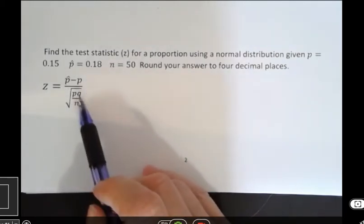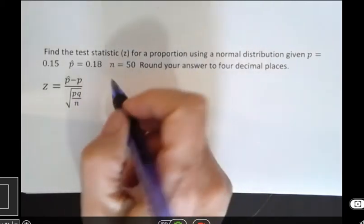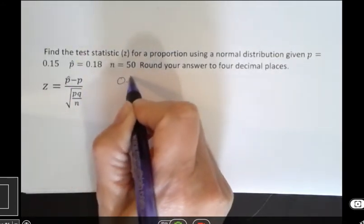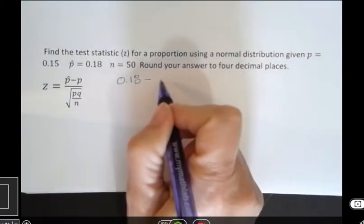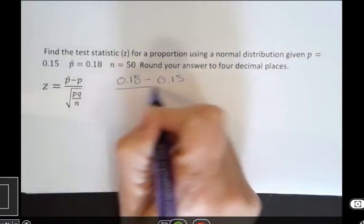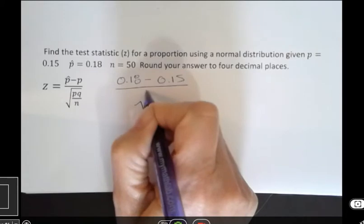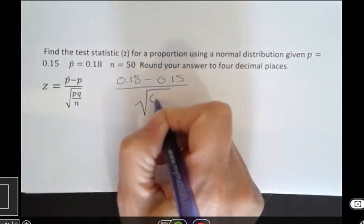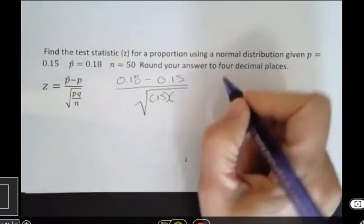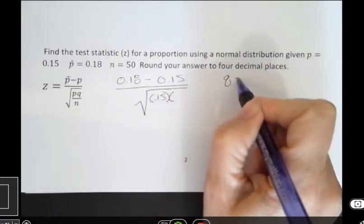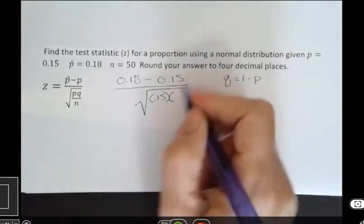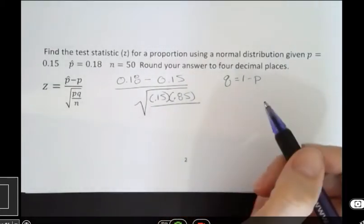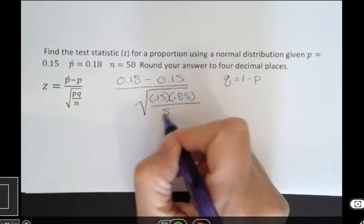You can always go back into your notes to see what that notation stands for. But I'm going to go ahead and write P hat, 0.18, minus P, which is 0.15, and then over the square root of P, which is 0.15. And then Q, remember Q is always 1 minus P, so 1 minus P would be 0.85 here. And then that goes over N, which is 50.